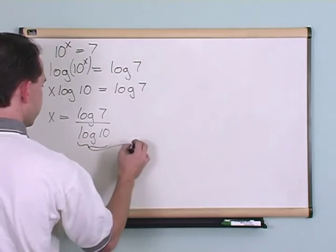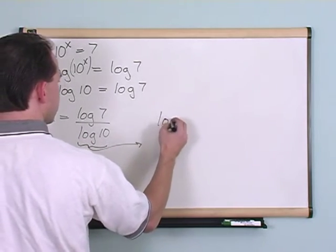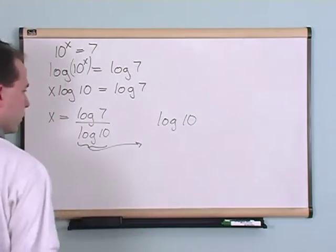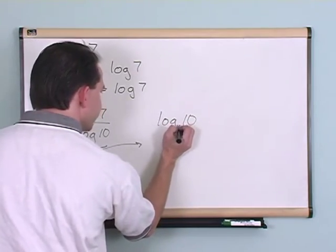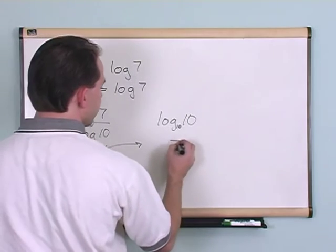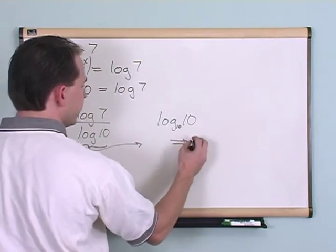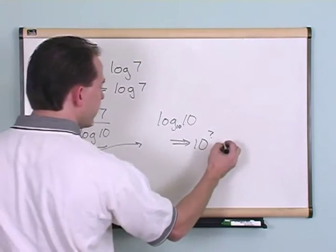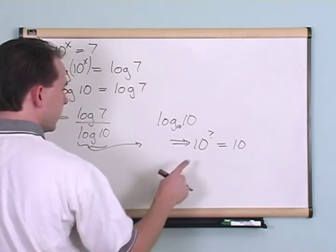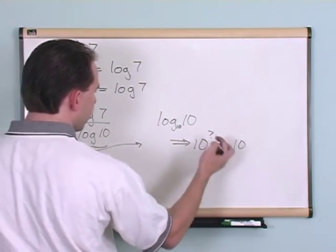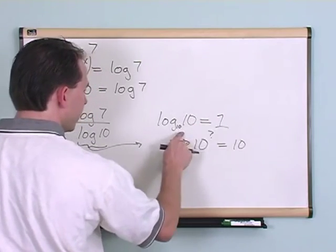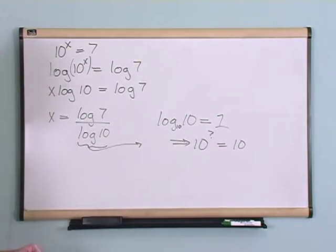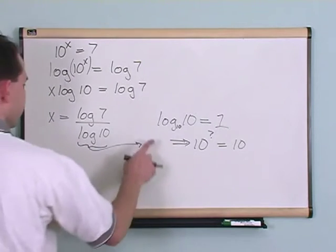But log of 10, what does that equal? Well this is an implied base 10 down here. So what it means is 10 to the power of whatever it is I'm looking for equals 10. So 10 to the power of what equals 10? Well obviously it's got to equal 1. 10 to the power of 1 is equal to 10. So that's what I'm going to use. So this is just equal to 1.